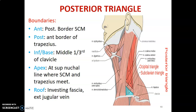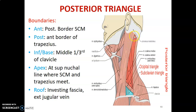What are the boundaries of the posterior triangle of the neck? Remember our quadrilateral area — anteriorly you have your clavicle, divided into anterior and posterior triangles by the sternocleidomastoid. The posterior triangle is the region below the muscle. Anteriorly it is bordered by the posterior border of the sternocleidomastoid muscle, posteriorly by the anterior border of the trapezius muscle, and inferiorly at the base by the middle third of the clavicle. The apex of the posterior triangle is at the superior junction of the sternocleidomastoid and trapezius muscles.